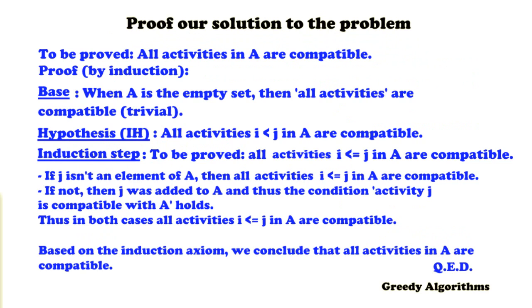So it's actually quite good for an algorithm, O(n log n). Let's now prove our solution to the problem. What has to be proved is that all activities in A are compatible. And in order to do this, because you can have infinitely many activities, you have to use induction.